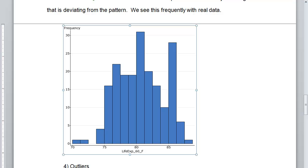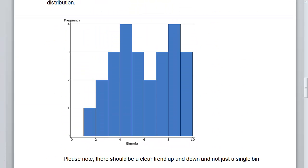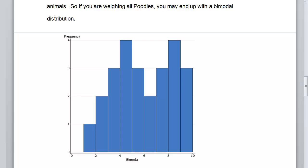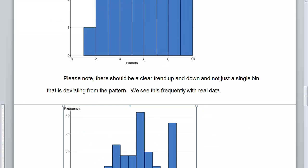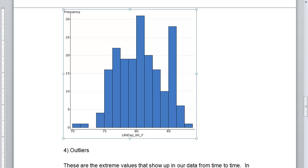So I would still call this unimodal with a single trend up and a single trend downward. And this guy and this guy are probably just characteristics of the bin size that I chose to display the data. So be careful about bimodal has to be clearly an up and down trend and not just a random poking out that's deviating from the pattern.